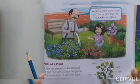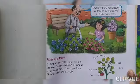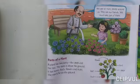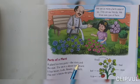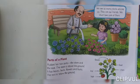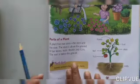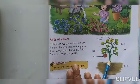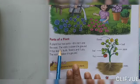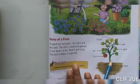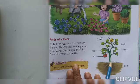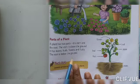Now let's look at the parts of a plant. Plants have two main parts: the stem and the root. This is the root, and this is the stem. The stem is above the ground — it grows above the ground.